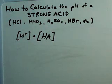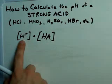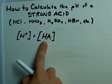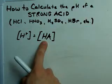These are the easiest kind of pH calculations to do, because the concentration of hydrogen ions in the solution is exactly the same as the concentration of acid in the solution.